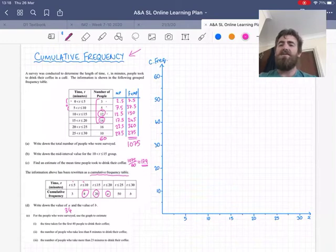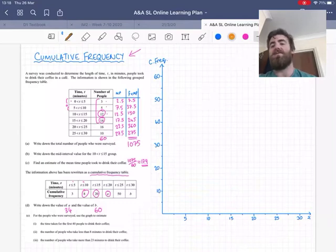And for finding B, we could do either of those 2 methods, add up all 6 or do 50 plus the 6th one, 10. Or we actually already know it, because it's the same as part A, the total number. Because the final cumulative frequency will be the total number.